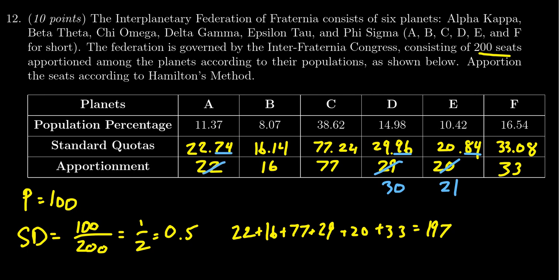So the correct apportionment using Hamilton's method would be 23, 16, 77, 30, 21, and 33 for states A, B, C, D, E, F respectively.